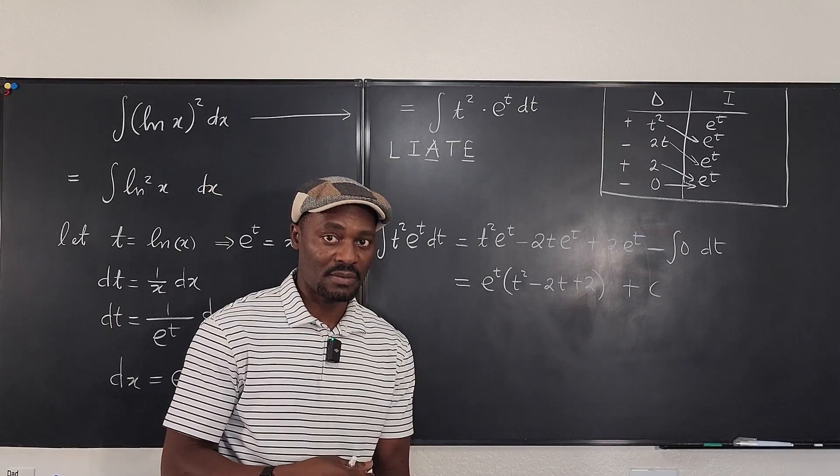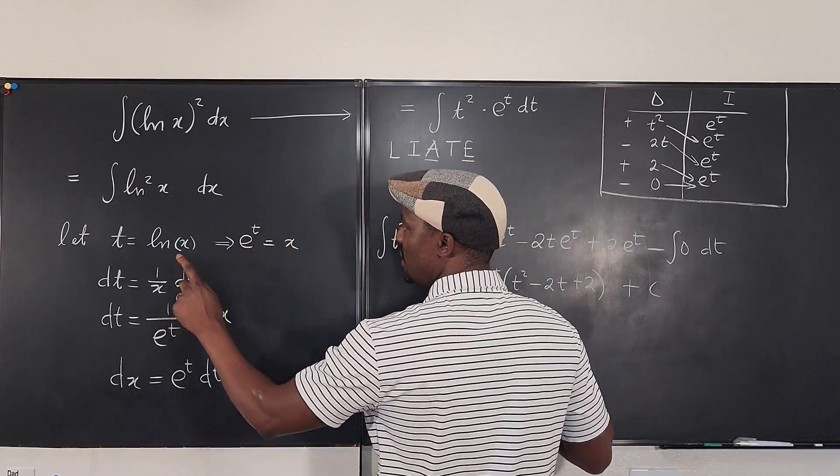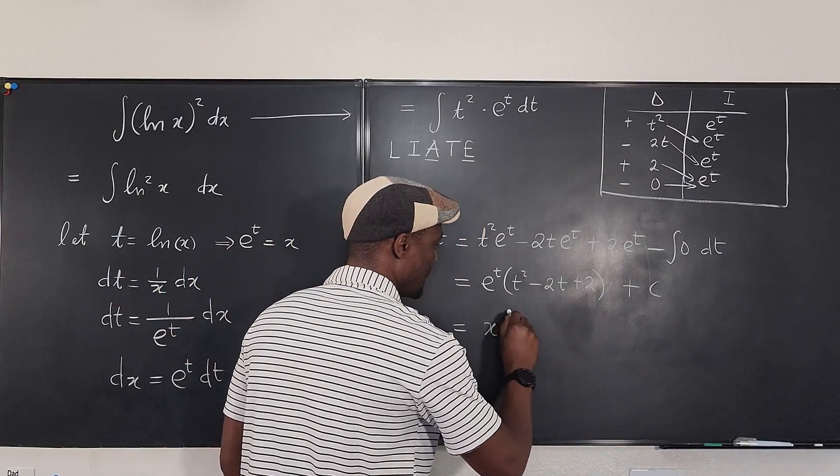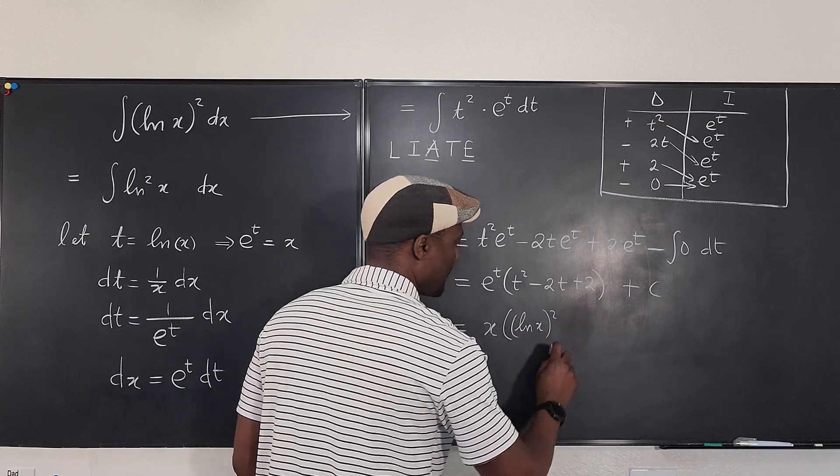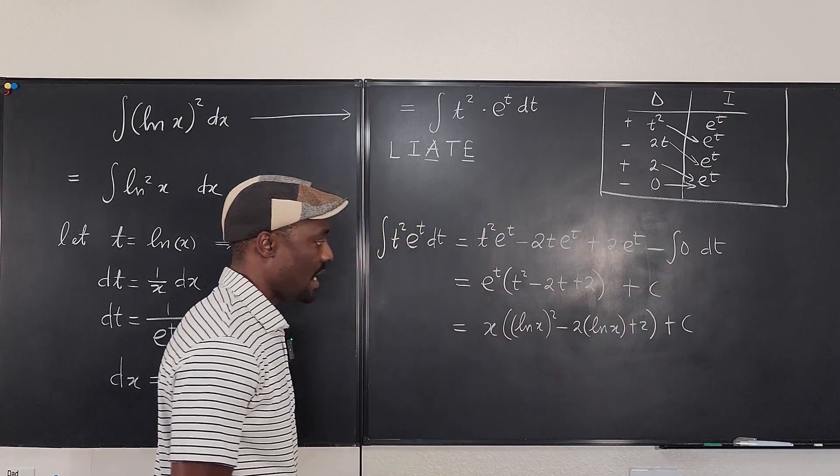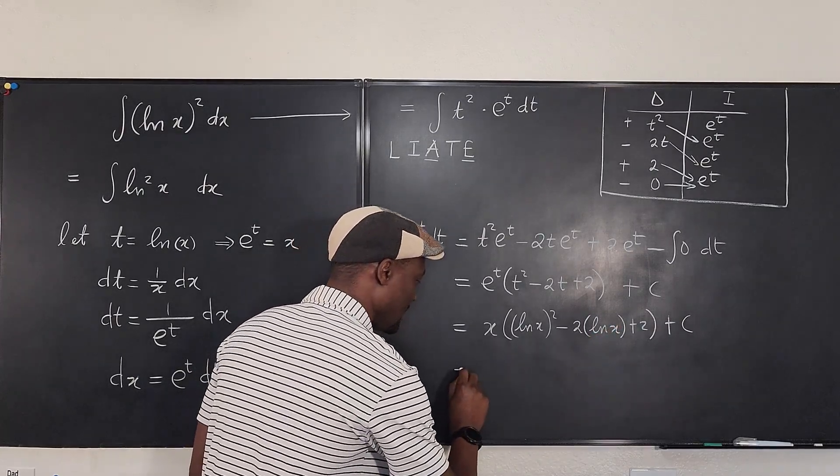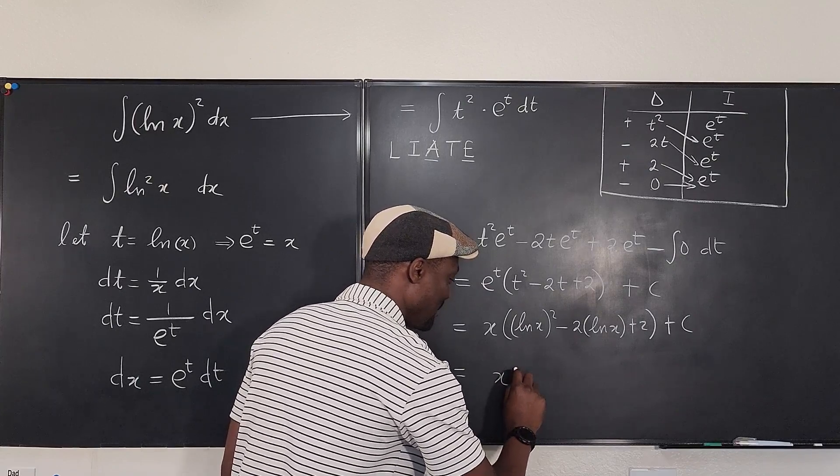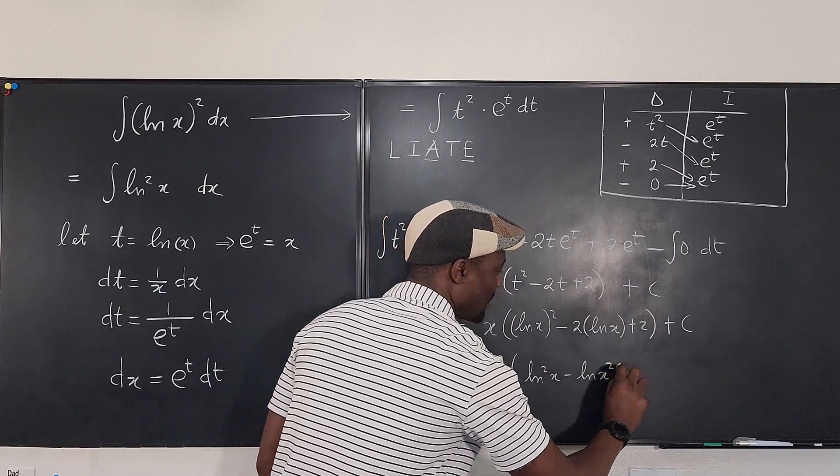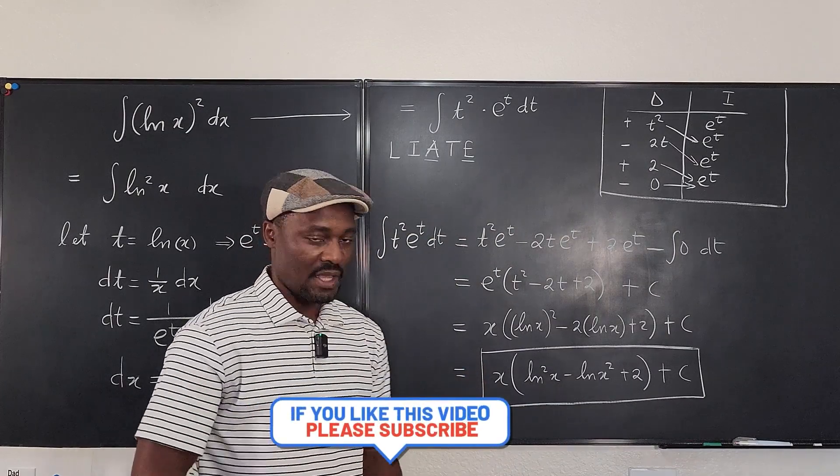And that's it. But remember, the question was based on the variable x, not t. So don't leave your answer this way. We have to go back here and replace e to the t. We said e to the t was x. And we said t was ln of x. So we're going to go back here and say this is x times ln of x squared minus 2 times ln of x plus 2 plus c. You know what? I can move this two up here so that my answer, the fancier way to write it will be x times ln squared of x minus 2 ln of x plus 2 plus c. This is what we're looking for.